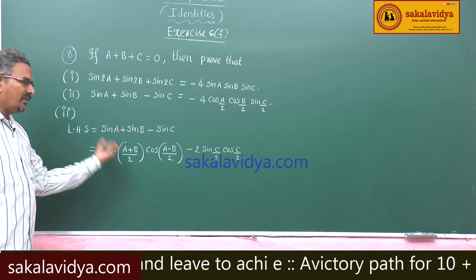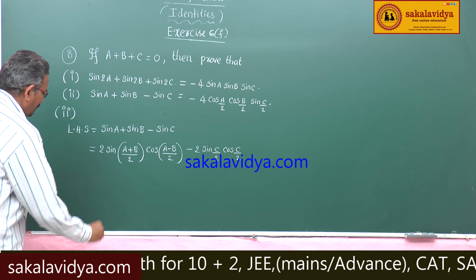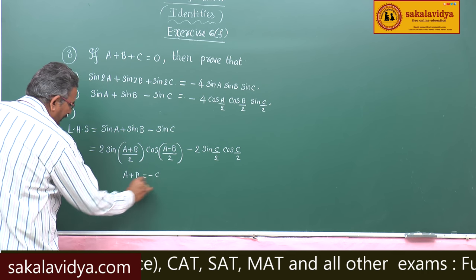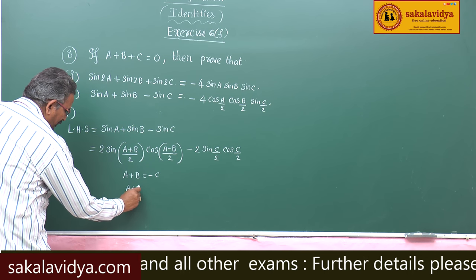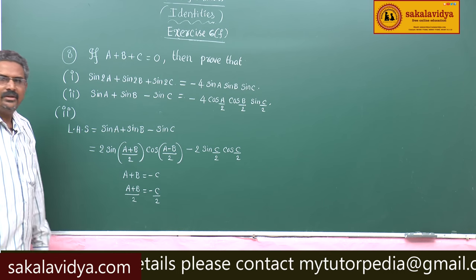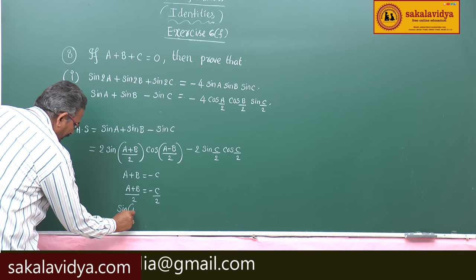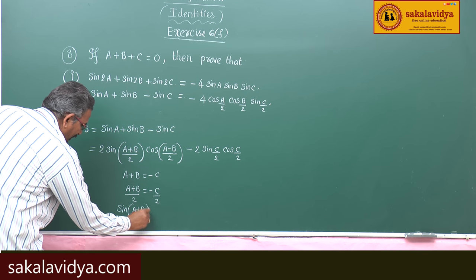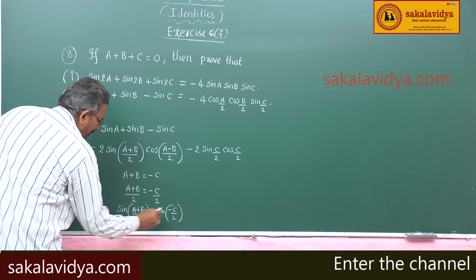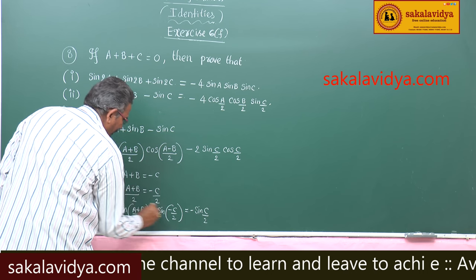Now let us simplify sin((A+B)/2). Since A + B + C = 0, we have A + B = -C, so (A+B)/2 = -C/2. Applying sin on both sides, sin((A+B)/2) = sin(-C/2) = -sin(C/2).